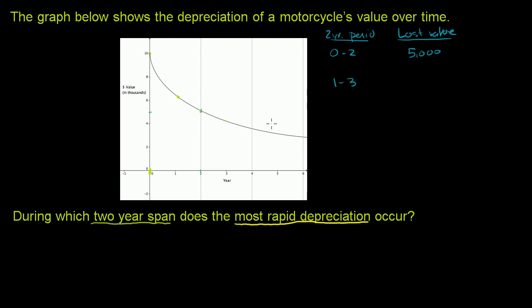One to three years. That's the other two-year period. We started, it looks like at about $6,100, maybe $6,200 or so. And we went to $4,000. So we lost about $2,200. So definitely less than what we lost in the first two years.